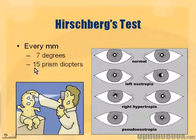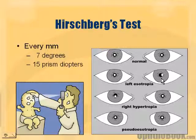That's approximately 15 prism diopters. This is the measurement we actually use in clinic — prism diopters. We'll go over prisms in a second, but the Hirschberg test is very useful.